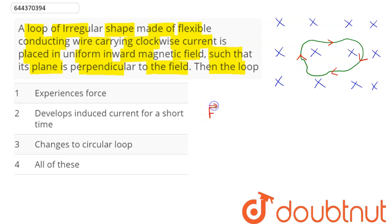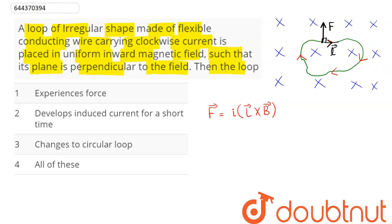As we know, when a current-carrying wire is placed in a uniform magnetic field region, the magnetic force acting on it is given as i into l cross B vector. By l cross B vector, we can see the force will be perpendicular to the l vector as well as B, hence the force will be perpendicular to each segment of the wire and will be lying in the plane of the loop. This force is acting radially in the outward direction.